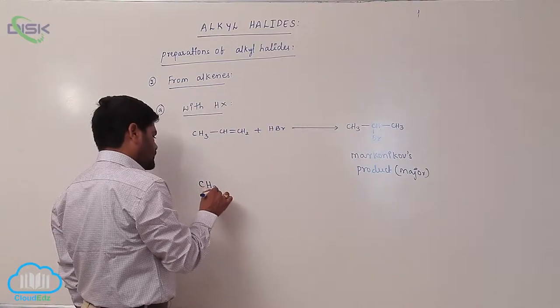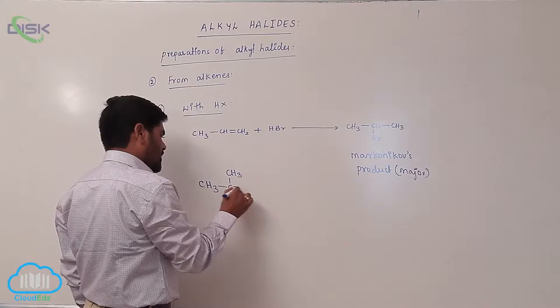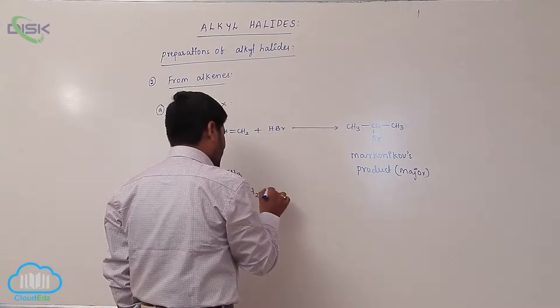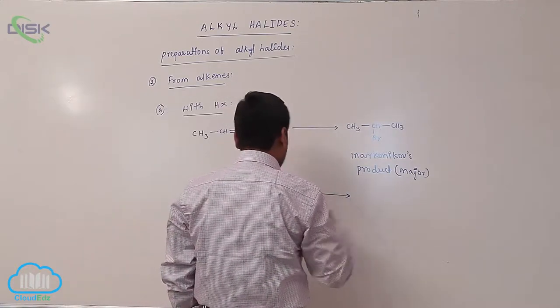Second example: CH3 with a methyl group, double bond CH2, when reacting with hydrogen bromide.